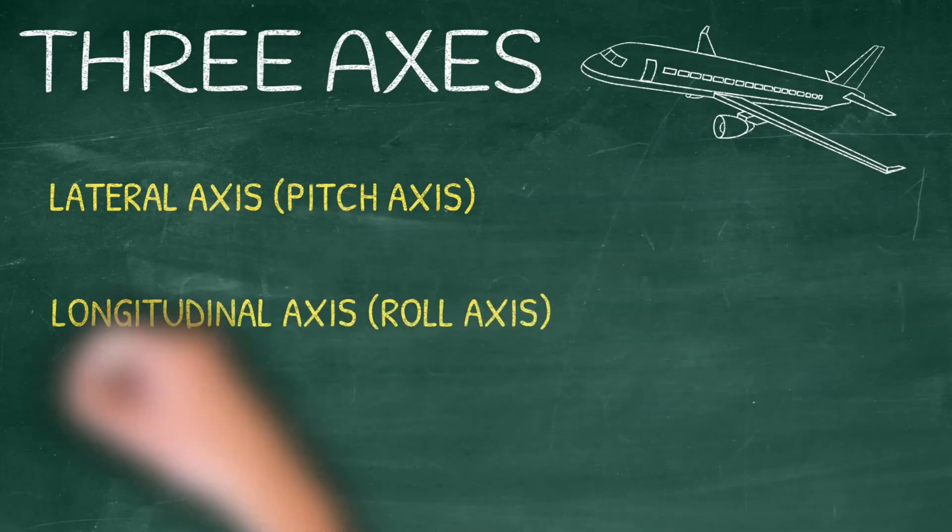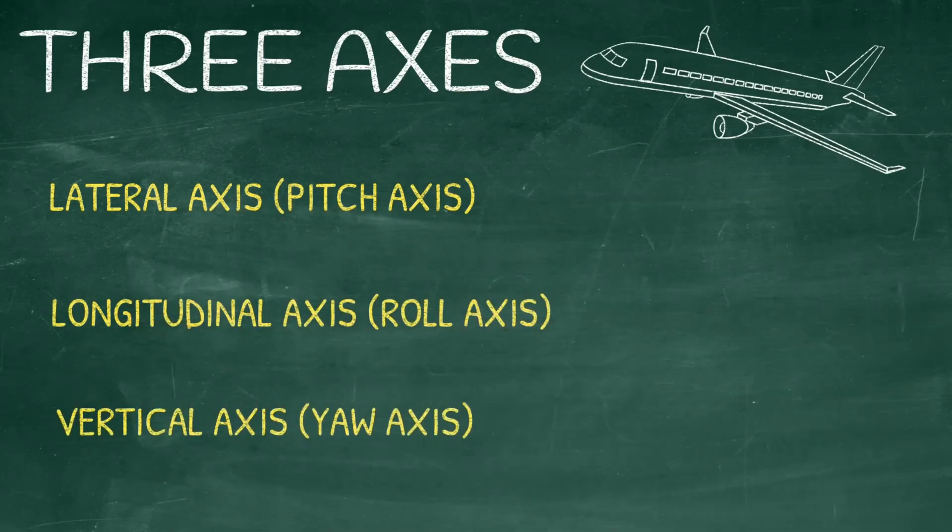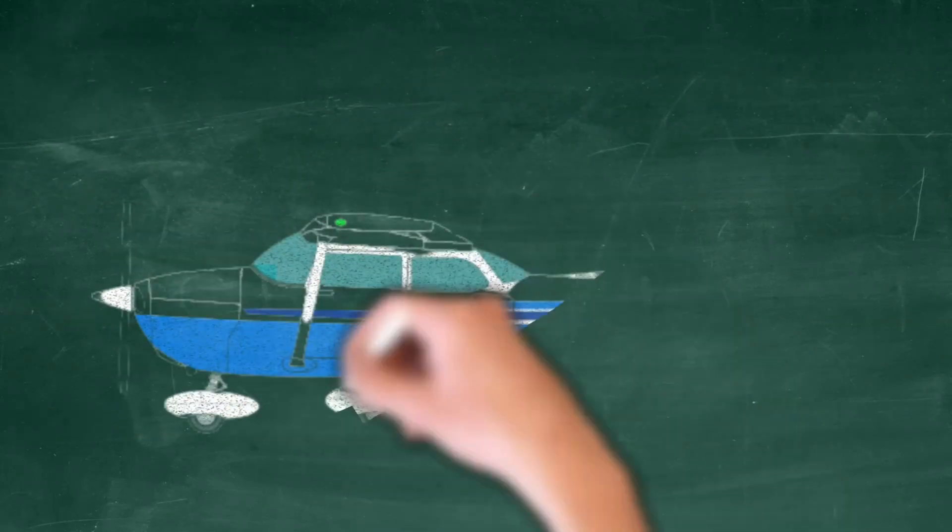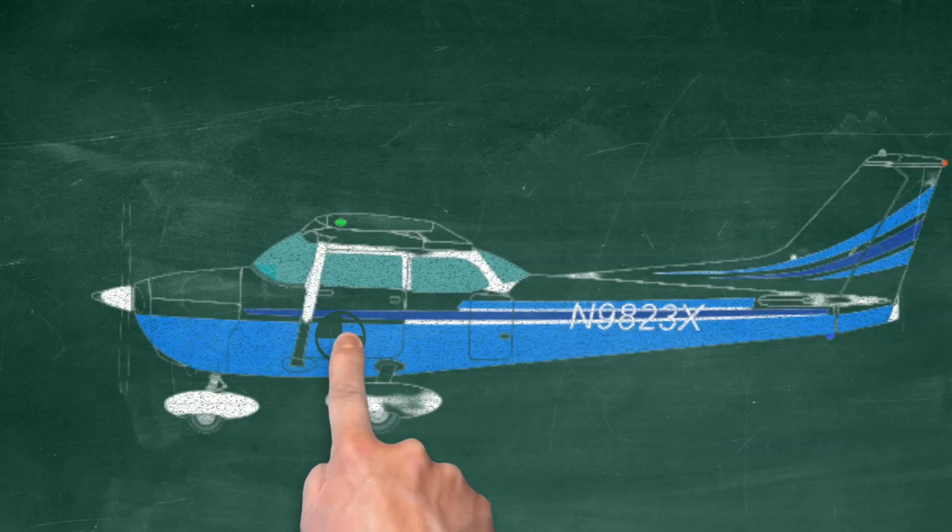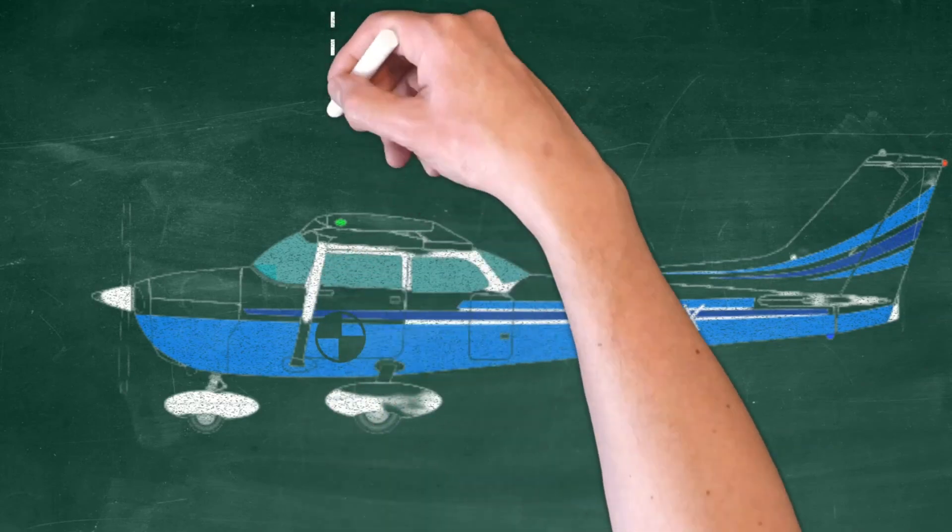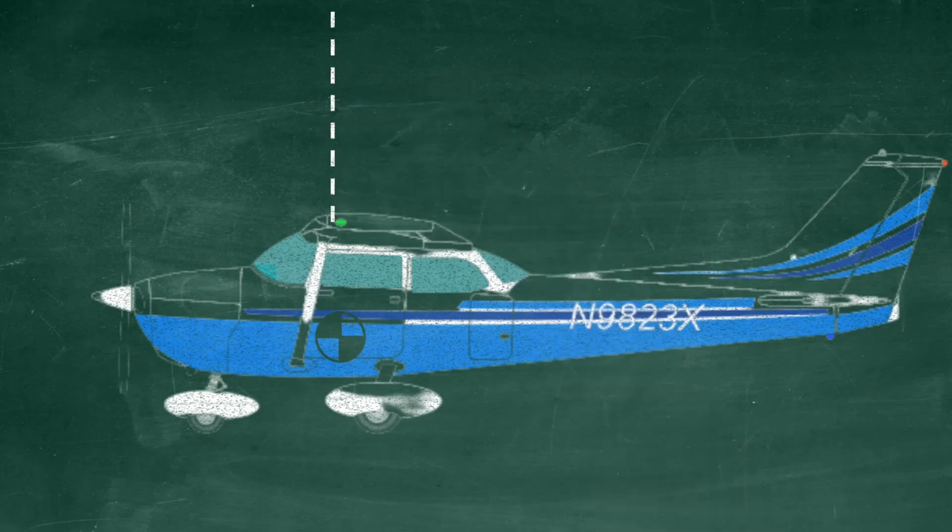The lateral axis, the longitudinal axis, and the vertical axis. The center of gravity is a point where if you were to hang the aircraft from a string it would balance perfectly. Most airplanes are designed so that the center of gravity is the center of movement on all three axes.